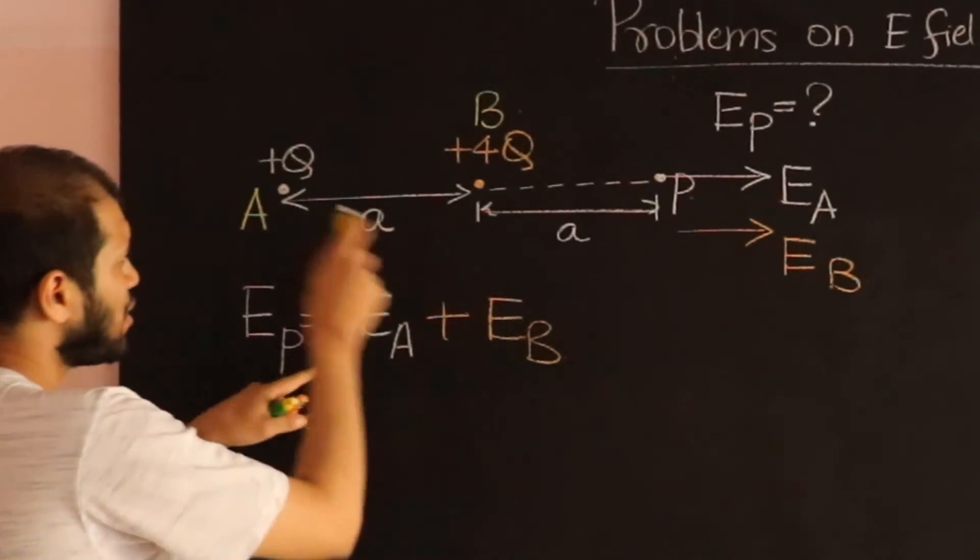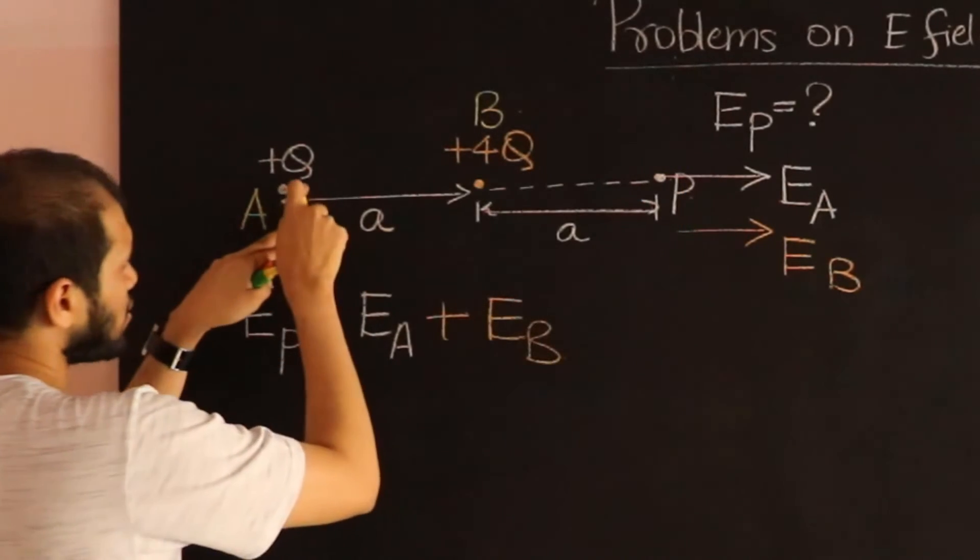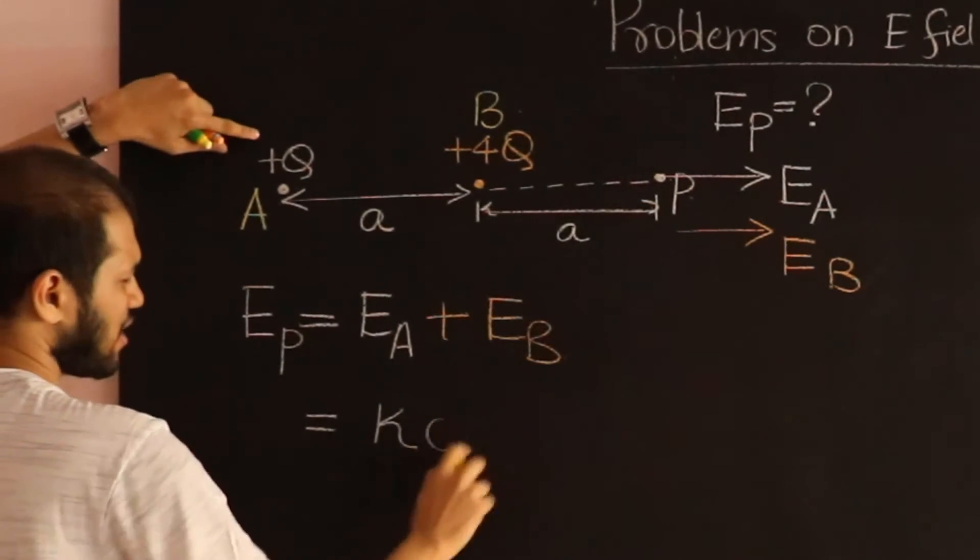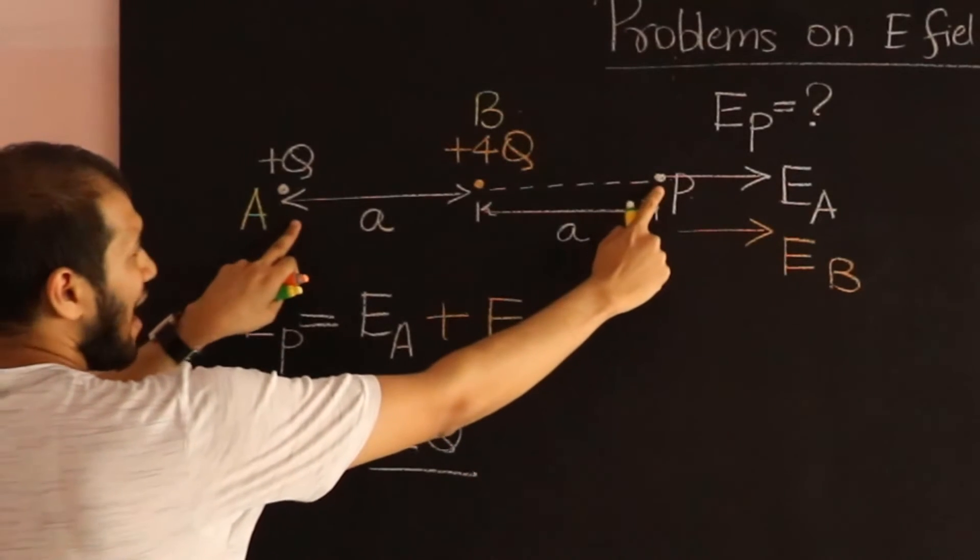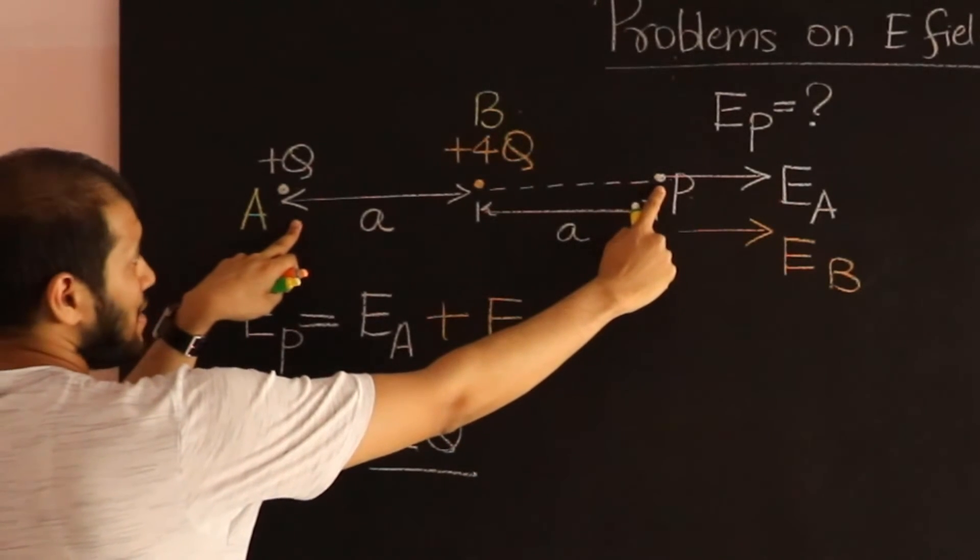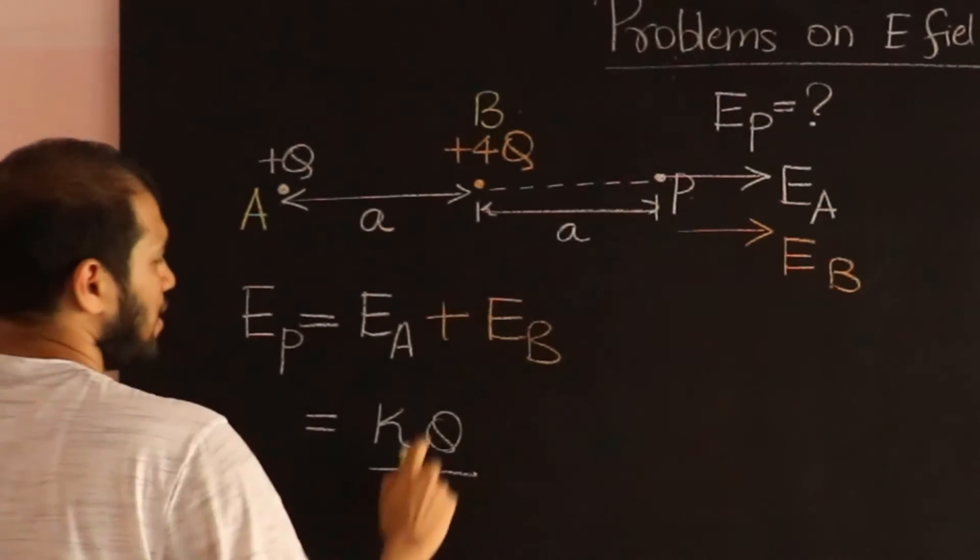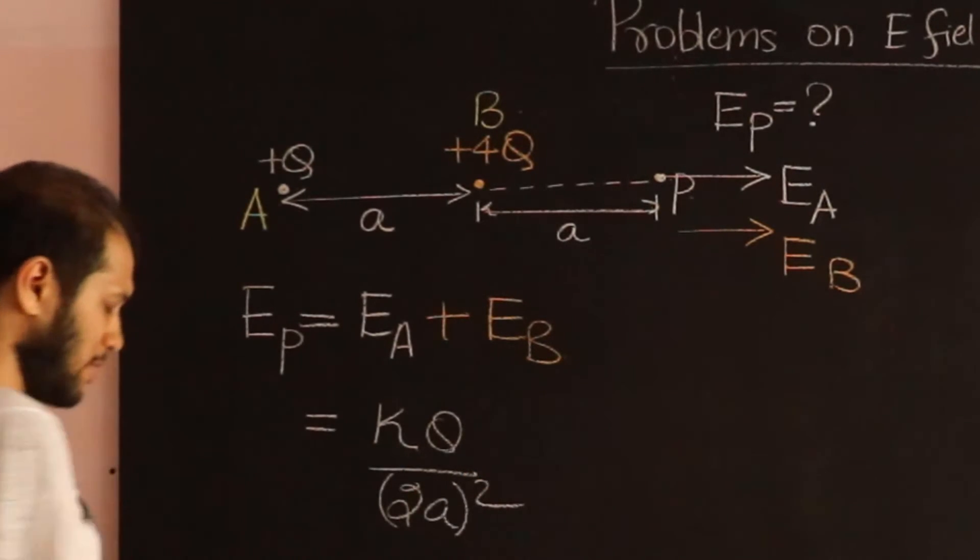So if I use KQ by R squared for this guy, for charge A, it's going to be K times charge Q, divided by R, which is the distance from A to P. So I have to do 2A, the whole squared.